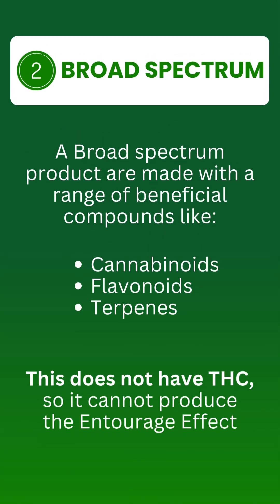Broad spectrum products contain the CBD and the other cannabinoids found in medical cannabis products, but also flavonoids and terpenes. Because it does not have any THC in it, it does not produce the entourage effect that you normally find in medical cannabis products.